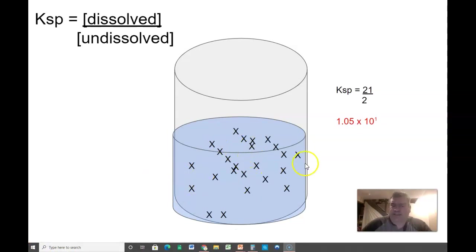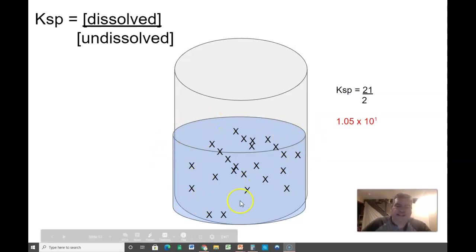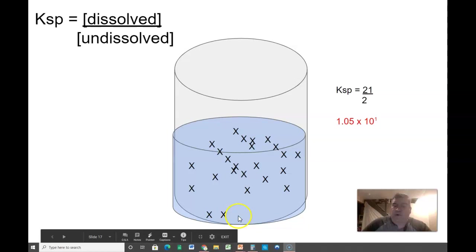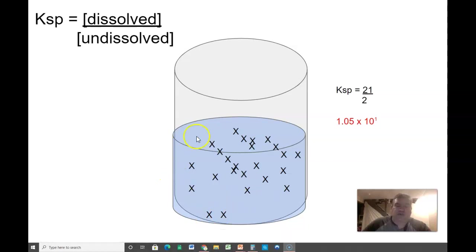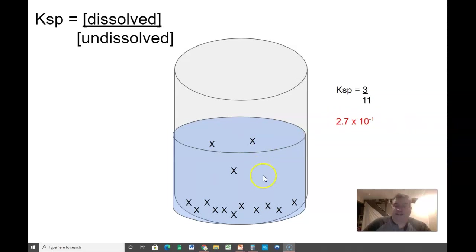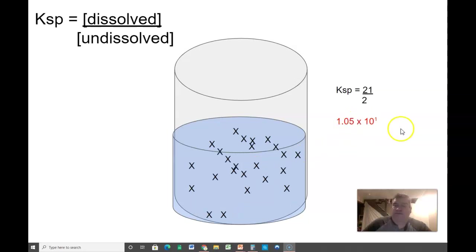Here's another case with a different chemical. Most of these molecules dissolved in the water, with just a tiny bit that didn't dissolve. Since we have lots dissolved over not much undissolved — 21 over 2 — we end up with a large KSP value, a number bigger than one. If it's not dissolving much, we get a small number. If it is dissolving well, we get a large number.